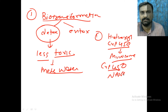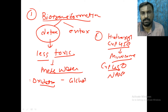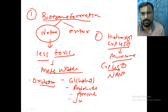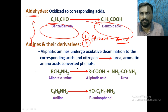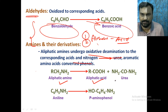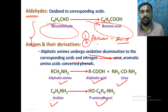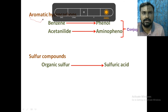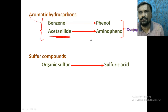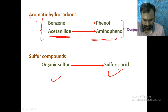Phase 1 has three reactions: oxidation, reduction, and hydrolysis. In oxidation, the subtypes are oxidation of alcohol, oxidation of aldehyde, oxidation of amines, oxidation of sulfur drugs, and oxidation of aromatic amines. Amines undergo oxidative deamination and are converted to corresponding acid and nitrogen — like aliphatic amine converted to aliphatic acid and urea. Aniline is converted to para-aminophenol — this is important to remember. Aromatic hydrocarbons like benzene are converted to phenol, and acetanilide is converted to aminophenol. Organic sulfur is converted to sulfuric acid.